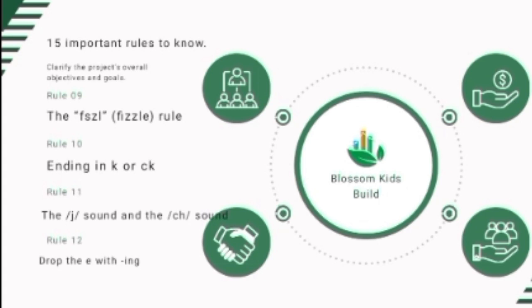Rule number eleven: the J sound and CH sound. In a one-syllable word, when a J sound immediately follows a short vowel, it is spelled D-G-E, as in 'badge,' 'hedge,' 'bridge,' 'dodge,' and 'smudge.' The D protects the vowel from the magic E rule. When a CH sound immediately follows a short vowel in a one-syllable word, it is spelled T-C-H, as in 'catch,' 'fetch,' 'stitch,' 'blotch,' and 'clutch.' Exceptions include 'much,' 'reach,' and 'which.'